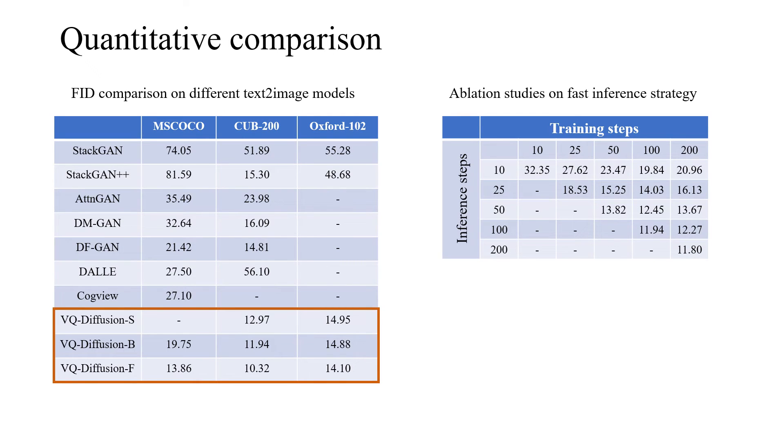The left table shows the comparison with previous works. VQ diffusion S denotes our model has similar parameters with GAN-based methods. However, our results can achieve better performance. When we increase the model size, our model can surpass previous works by large margins.